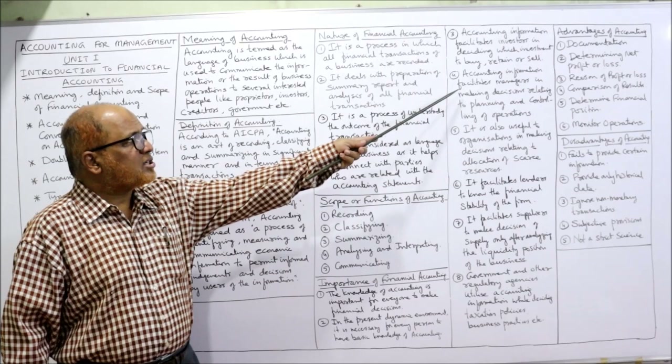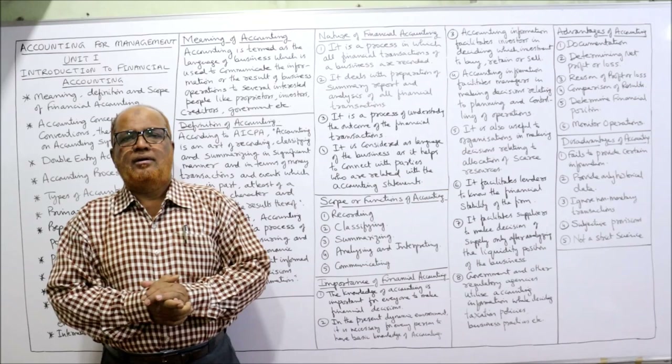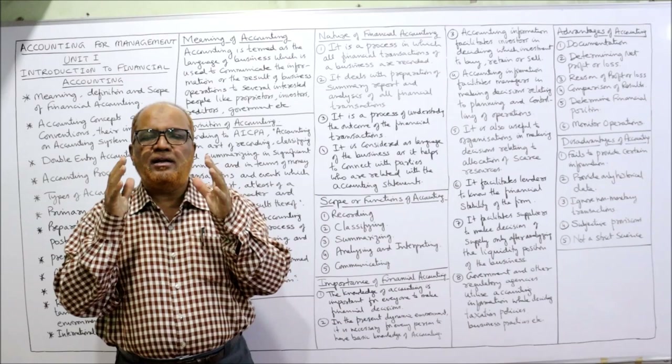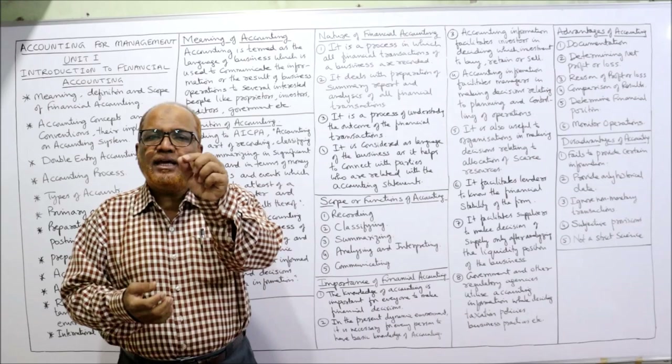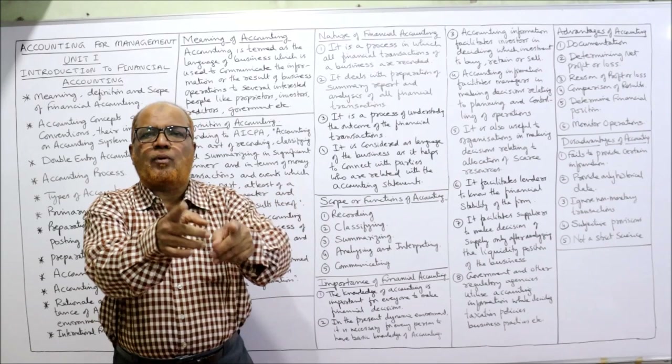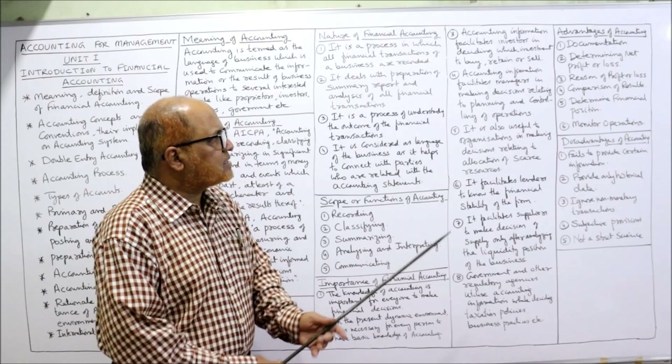Fourth, accounting information facilitates managers in making decisions relating to planning and controlling of operations. Management is the driver of the business and must take many decisions every day. The main functions of management are planning and controlling, and this can be done only with the information that accounting provides.